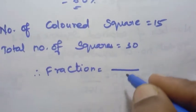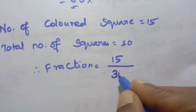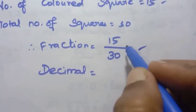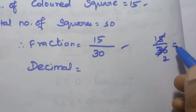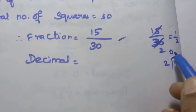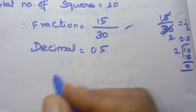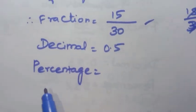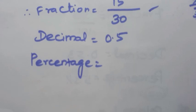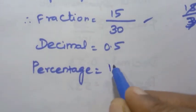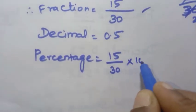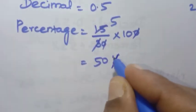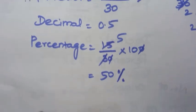For sum 5: fraction = colored/total = 15/30 = 1/2. Decimal: 15/30 = 0.5. Percentage: 1/2 × 100 = 50%. Answer for 5th sum: 50%.